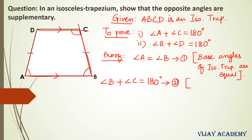The reason is co-interior angles. Now let us substitute equation 1 into equation 2. In the place of angle B, let me write angle A. So we get angle A plus angle C equals 180 degrees.